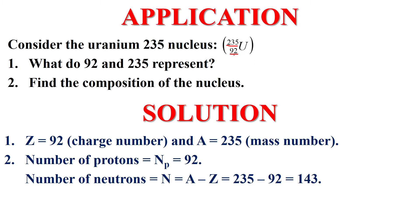From this representation, Z is charge number 92. A is 235 which is mass number.